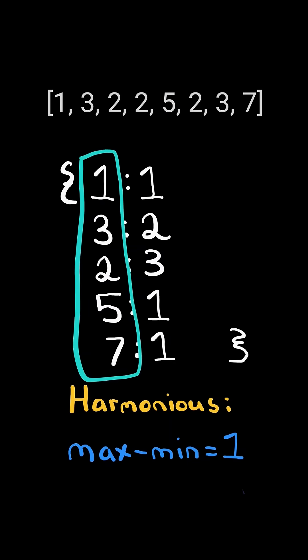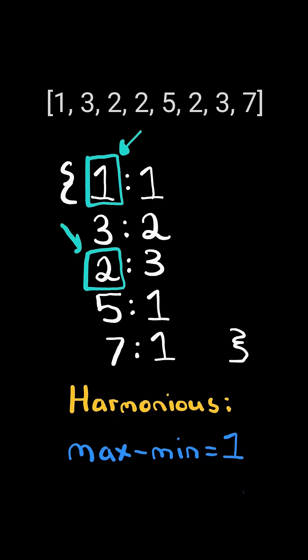If the number plus 1 exists in the map, then we can create a harmonious sequence with the length of the sum of the counts. In this case, the length is 4.